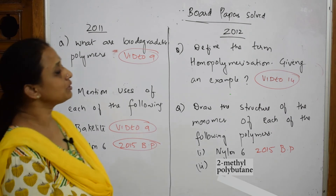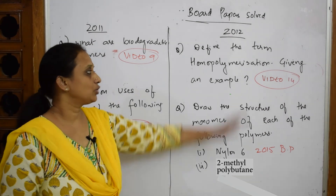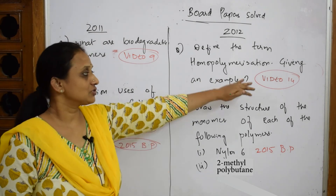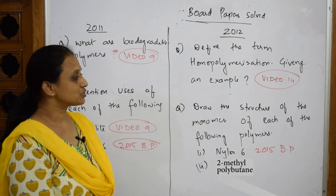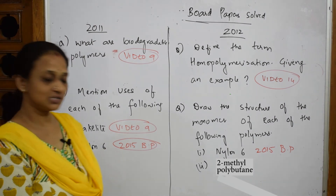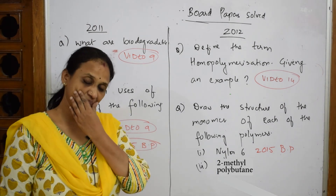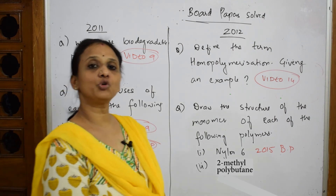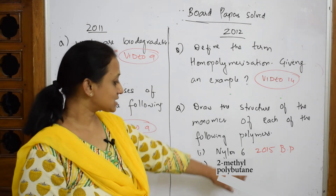In the 2012 paper they've asked to define the term homo polymerization with an example — homo means similar unit, and I covered that in video number 14. Next comes: draw the structures of the monomers of each of the following polymers. For Nylon 6, I did it in the 2015 board paper, please watch that video.